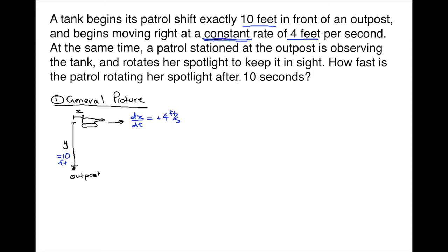The next thing we want is the rotation component. We're interested in how fast the patrol is rotating her spotlight. If the patrol is standing at the outpost, then this angle here between the line of sight and the perpendicular is also going to be very important. As time moves on, she's rotating her spotlight and that angle is changing. So this angle is what we're really interested in. That's our general picture.